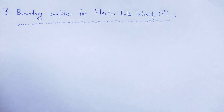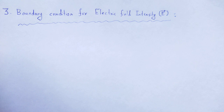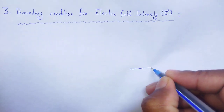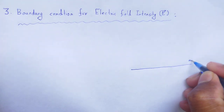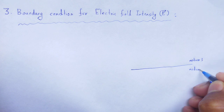To calculate boundary condition for electrical intensity E vector, we have to choose which Maxwell's equation is related to electrical intensity. That one is Maxwell's third equation, which is curl of electrical intensity is equal to minus del B by del t. Consider the interface as medium 1 and medium 2.